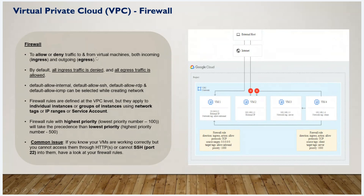In the firewall, ingress means incoming traffic and egress means outgoing traffic. In Google Cloud, by default, all incoming traffic is blocked. However, outgoing traffic — egress — is allowed by default.